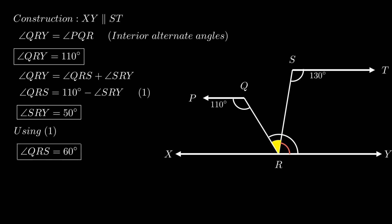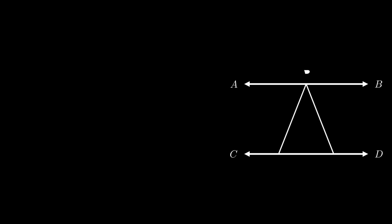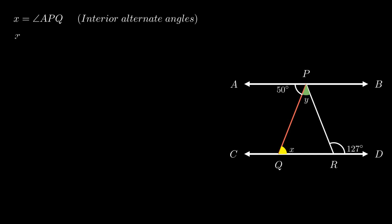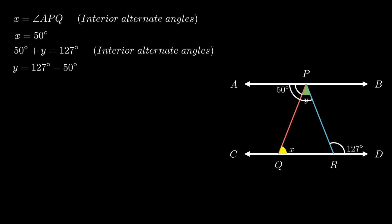Moving on to the next problem. Line AB is parallel to line CD, angle APQ equals 50 degrees, and angle PRD equals 127 degrees. We need to find angle X and angle Y. Angle X equals angle APQ as interior alternate angles are equal, so X equals 50 degrees. For angle Y: considering the sum of angle APQ and angle Y, which touches transversal PR, this sum equals 127 degrees. Therefore Y equals 127 minus 50 = 77 degrees.